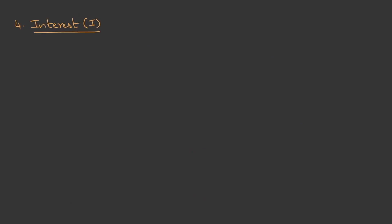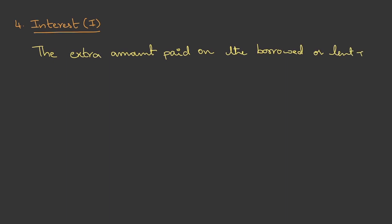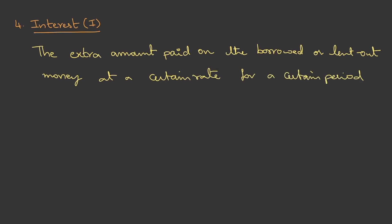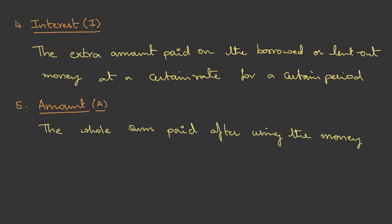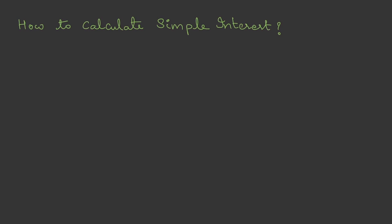The fourth term is Interest — it is the extra amount paid on the borrowed or lent out money at a certain rate for a certain period. The last term is Amount — it is the whole sum paid after using the money. We can think of Amount as the sum of Principal and Interest.